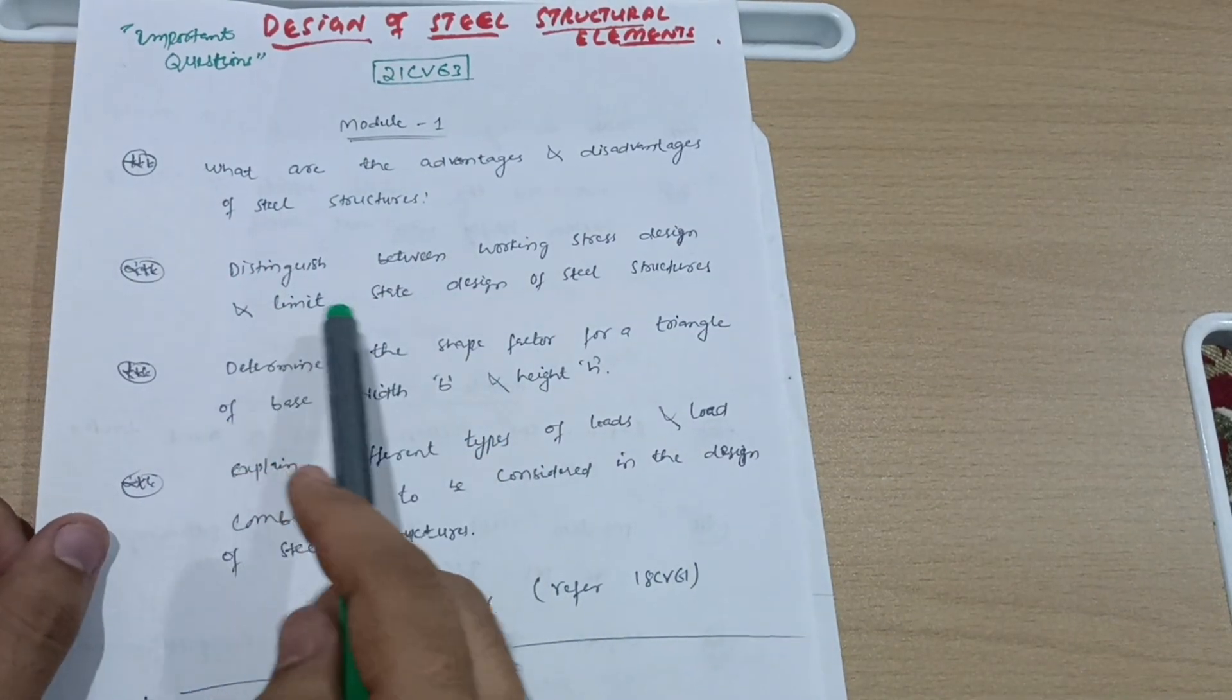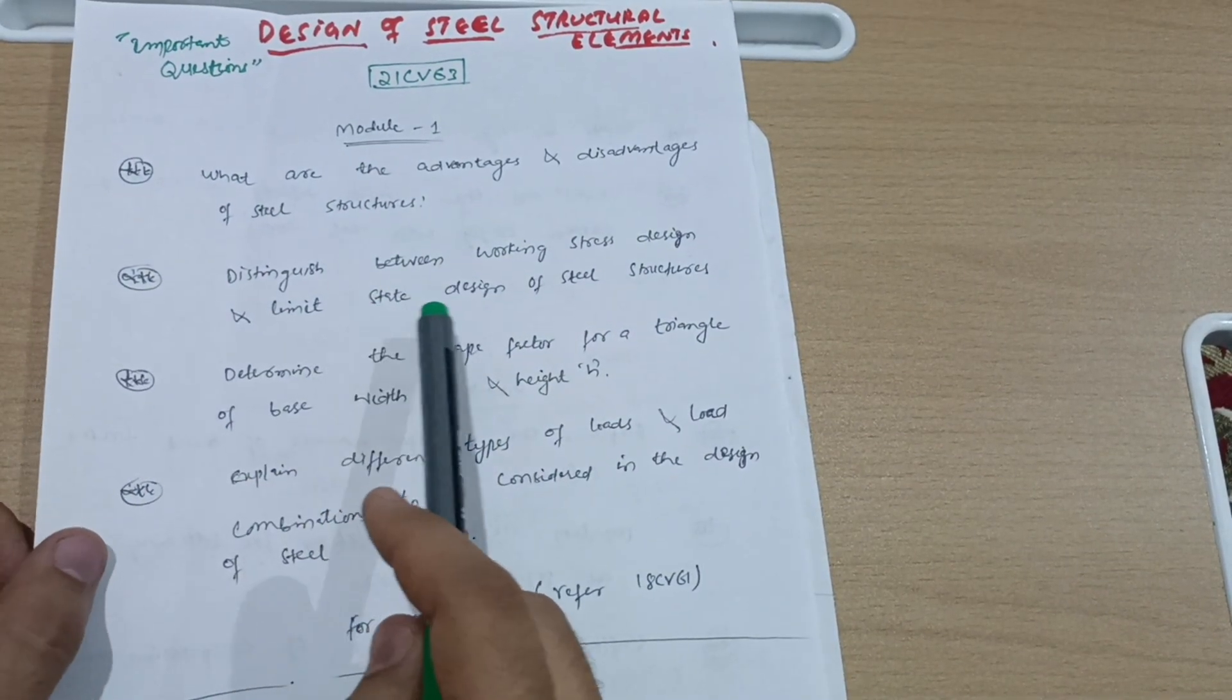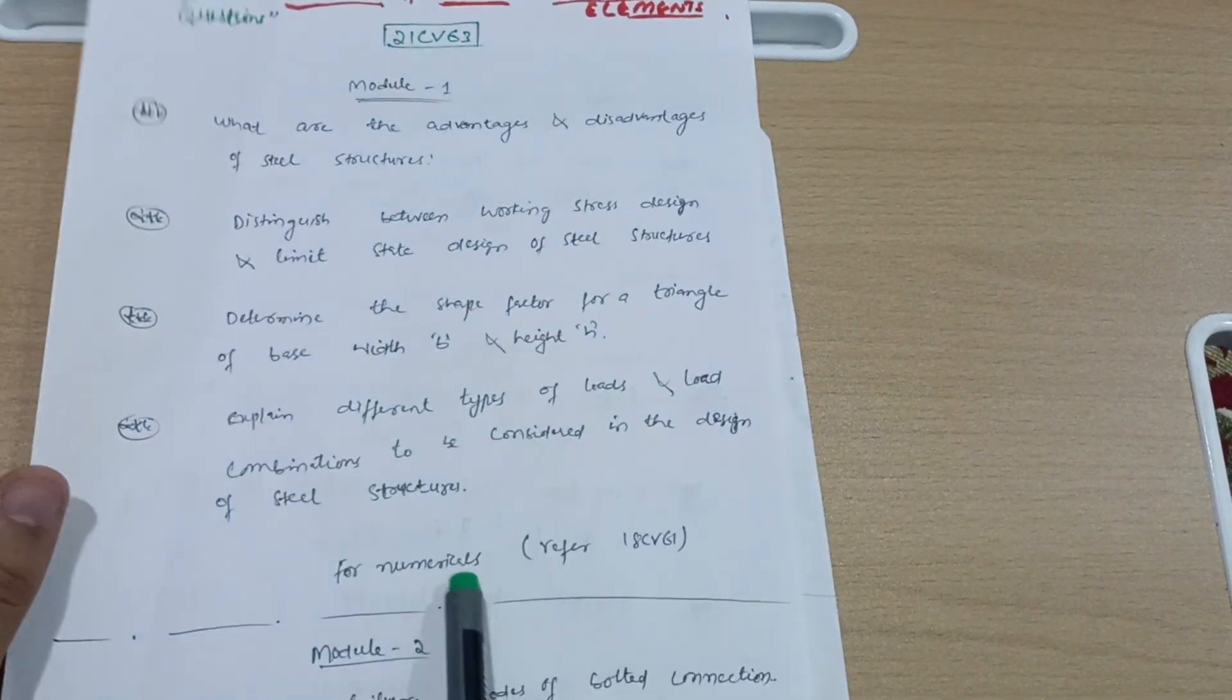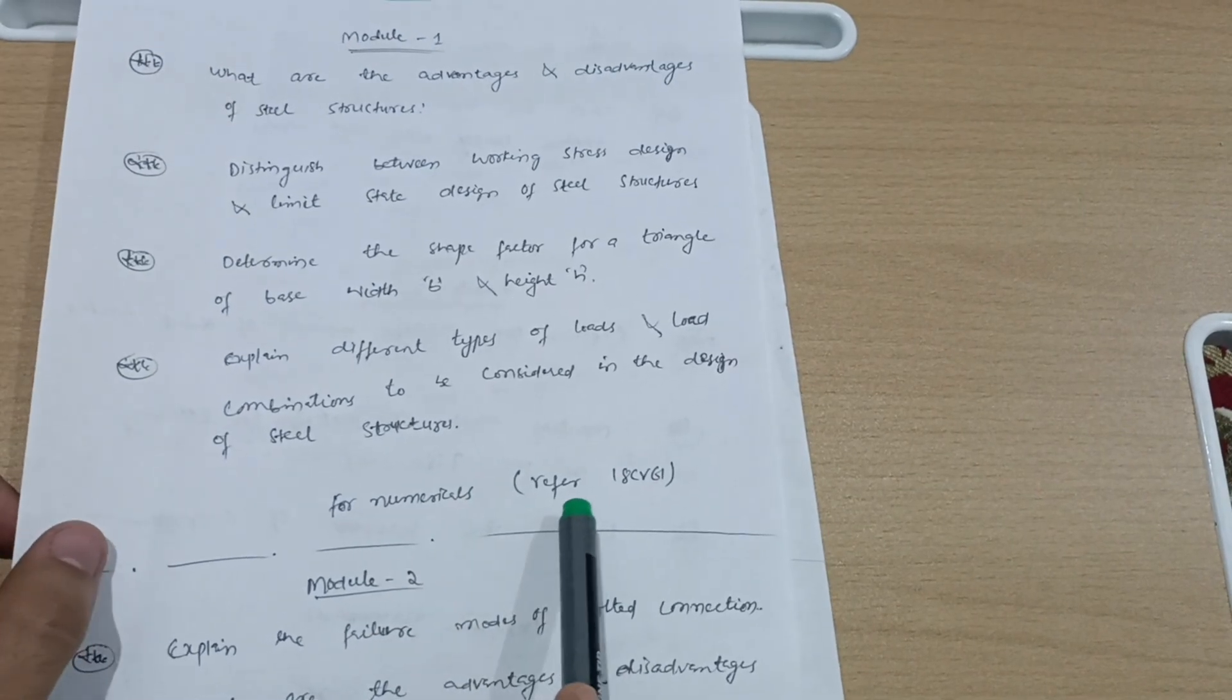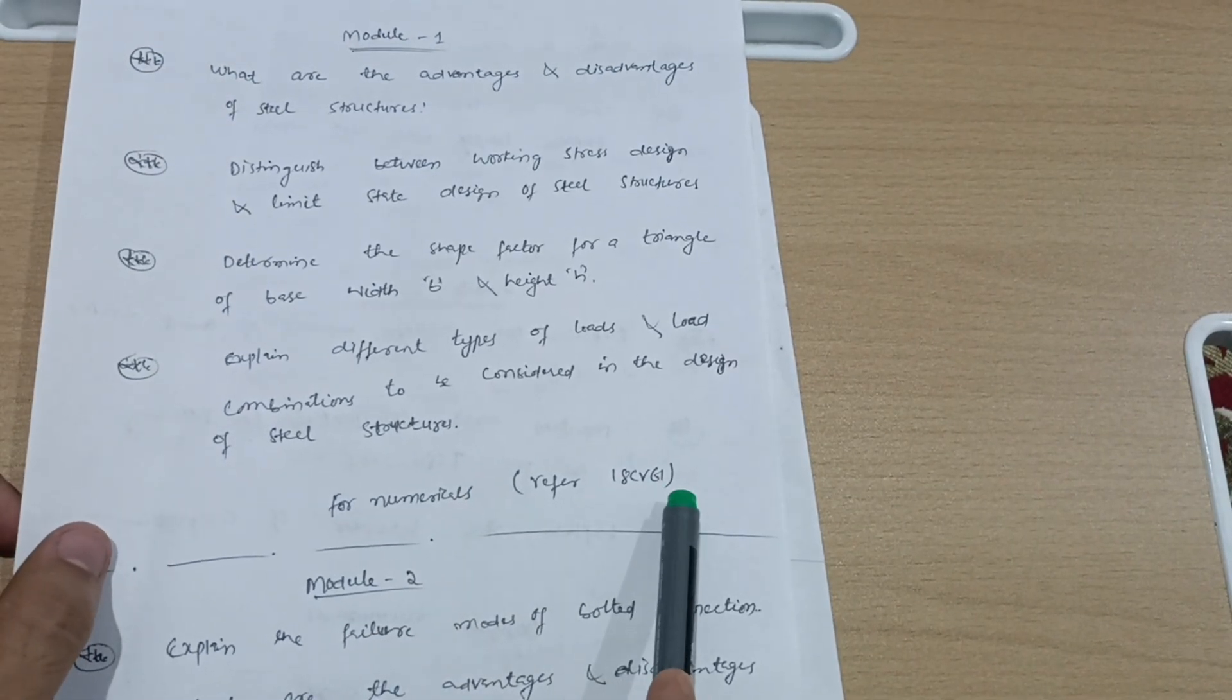First of all, these two are super important questions which you should definitely go through. This is all about Model 1, and as far as numericals are concerned, go through paper 18 Civil 61. Try to cover three papers and try to solve some numericals.